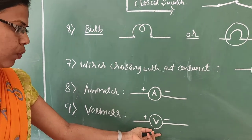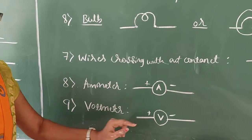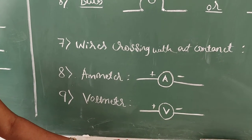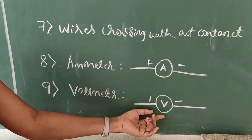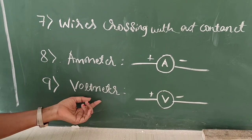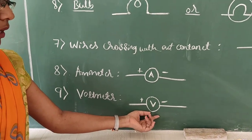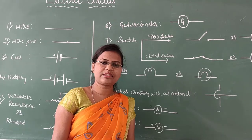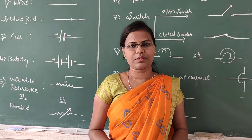Finally, this is the symbol for a voltmeter. A voltmeter is an instrument used to measure voltage across any electrical component in a circuit. This is the symbolic representation of a voltmeter. Thank you. In the next class, we will discuss Ohm's law.